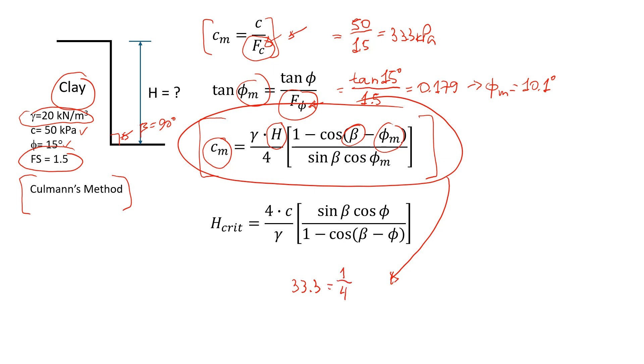This equals one over four times the unit weight, which is 20, times H that we don't know but we're going to find. Then it's one minus cosine of 90 degrees minus 10.1 degrees, divided by sine 90 degrees times cosine 10.1 degrees. We just put numbers in the formula, and if we do the calculations it gives us 33.3 equals 4.19 times H.